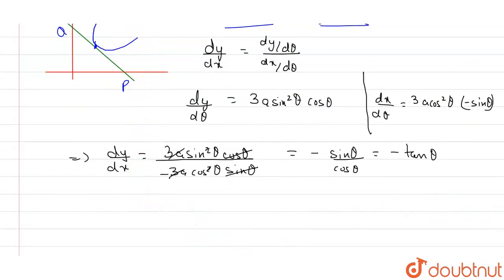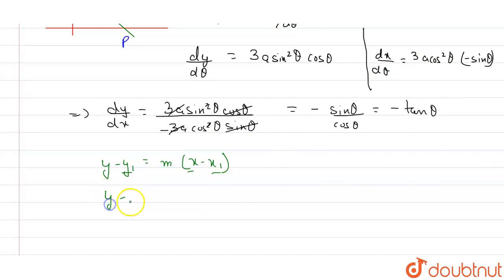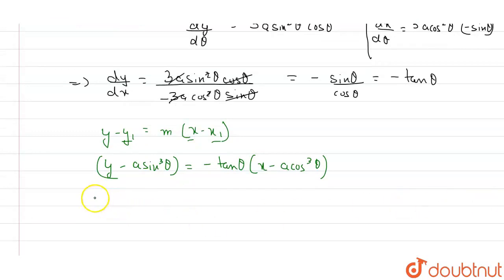Now we find the equation of the tangent. The equation of a tangent is y − y₁ = m(x − x₁), where the coordinates x₁ and y₁ are given in the question. Substituting: y − a sin³θ = −tan θ · (x − a cos³θ). Expanding tan θ as sin θ / cos θ, this becomes: y − a sin³θ = −(sin θ / cos θ)(x − a cos³θ).